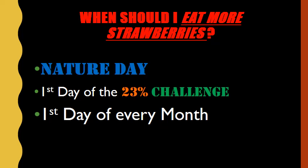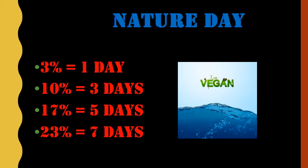Being that Nature Day is the first day of the challenge, it means Nature Day is the first day of every month — whether it's May 1st, June 1st, or July 1st, it's always Nature Day. Some of us may be inspired to eat more plants, maybe because of obesity, type 2 diabetes, heart disease, or cancer, or maybe you're considering transitioning to a more whole-food, plant-based diet.